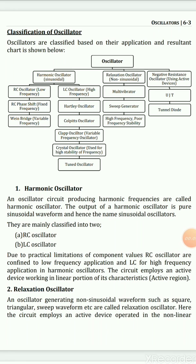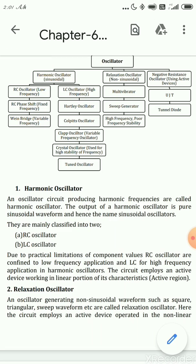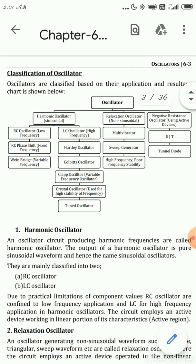This is the classification of oscillators. Oscillators are classified based on their application. Oscillators are broadly classified as harmonic oscillators, which produce sinusoidal signals, and relaxation oscillators, which are non-sinusoidal — their output can be a square wave, sawtooth wave, or other waveforms. The third category is negative resistance oscillators, which use active devices that exhibit negative resistance properties.